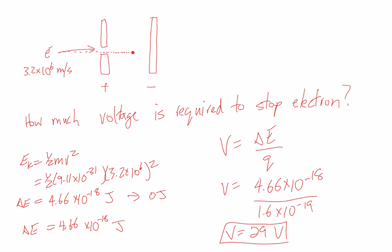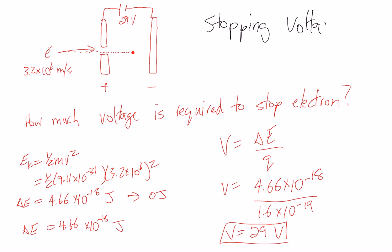So if we hooked up a battery with positive and negative terminals to the plates, all we need is a 29-volt battery and that would stop an electron moving at that speed — it would eventually come to a stop inside the plates. We call this the stopping voltage.